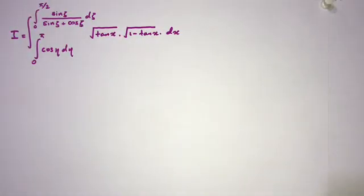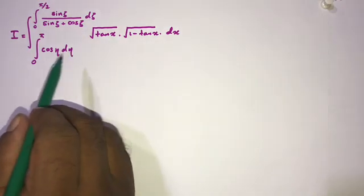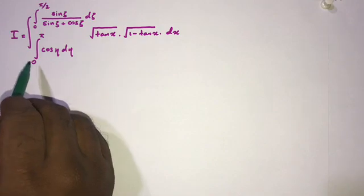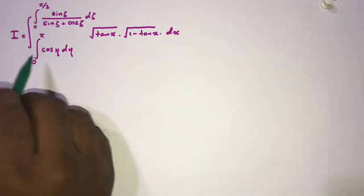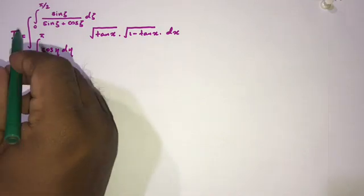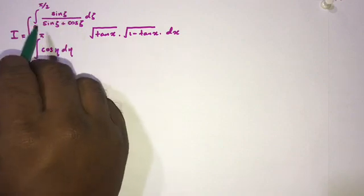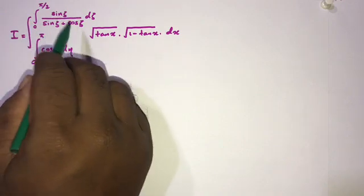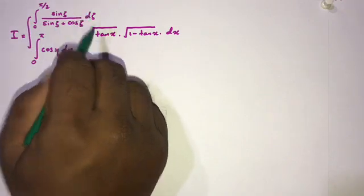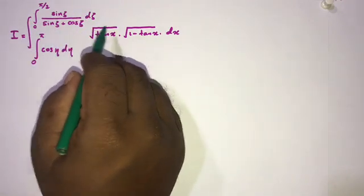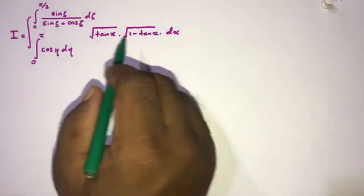Welcome to the mathematics channel. Today we are going to solve another interesting integral. The question involves a lower limit 0 to π/2 of cosine of η dη, and an upper limit 0 to π/2 of sine of ζ over (sine of ζ plus cosine of ζ) dζ, times the square root of tan(x) times the square root of 1 minus tan(x) with respect to x.